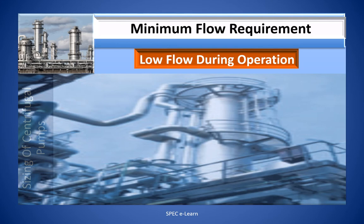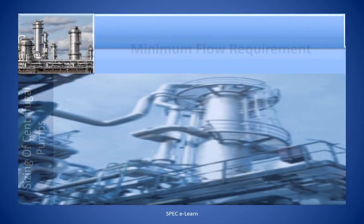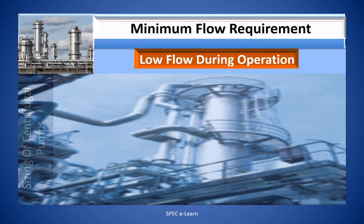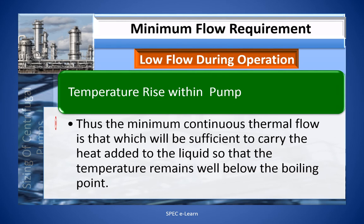Temperature rise within a pump is an important parameter when determining the minimum flow requirement. When operated away from its best efficiency point flow, inefficient operation results in heat being added to the fluid as it travels through the pump. At extremely low flow, the heat added can raise the temperature to the boiling point of the liquid at the suction pressure, resulting in vapor pocket formation within the pump — causing vapor lock and unstable operation.